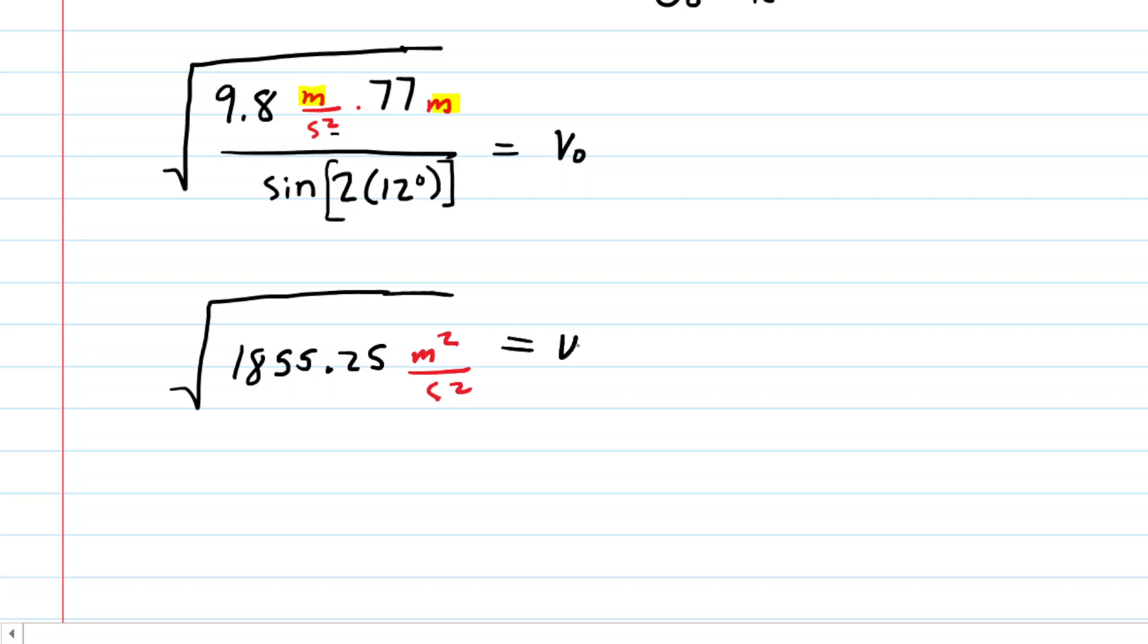And then of course we have to take the square root and when we do that we're going to get about 43.1. And when you square root meters squared you get meters. When you square root seconds squared you get seconds. And so we have a final answer, 43.1 meters per second. That is the speed at which that motorcyclist must launch himself in order to travel that world record distance.